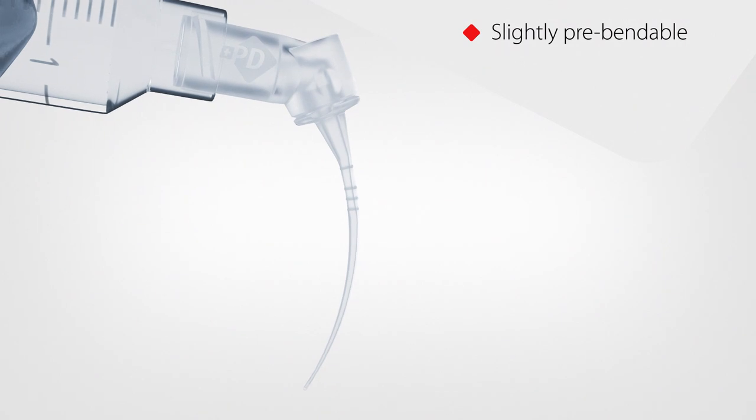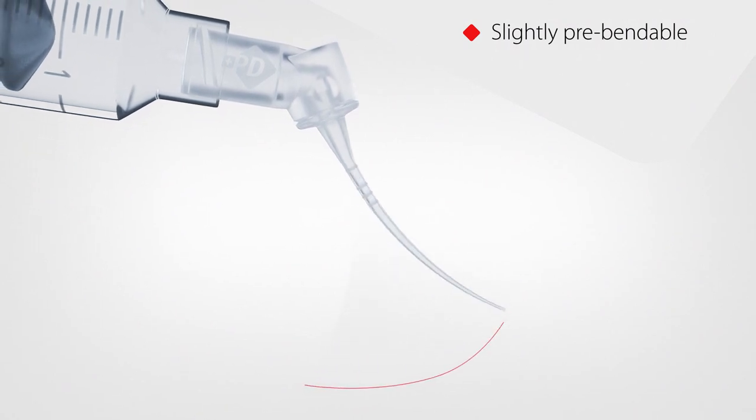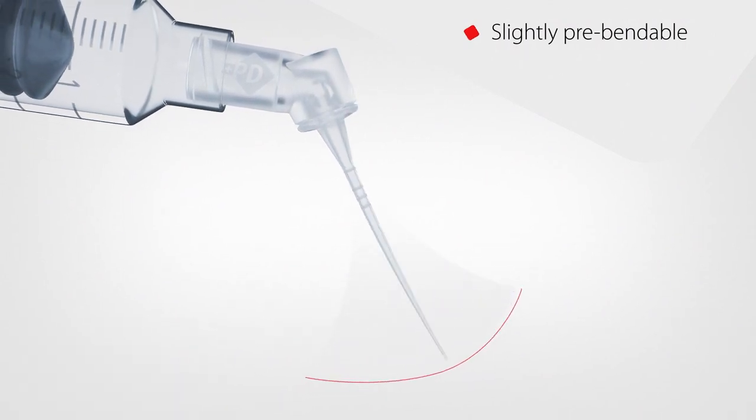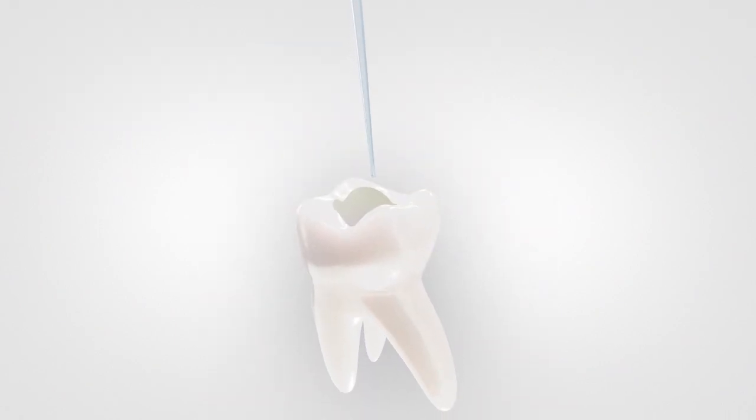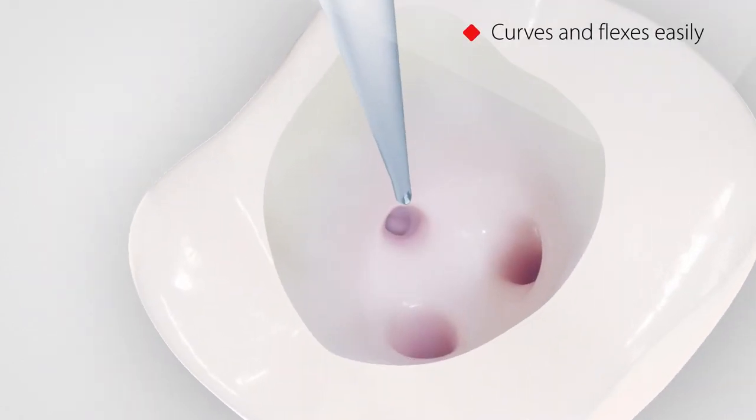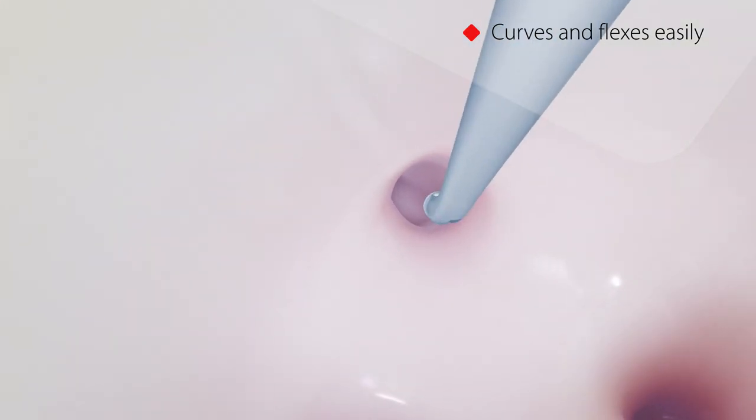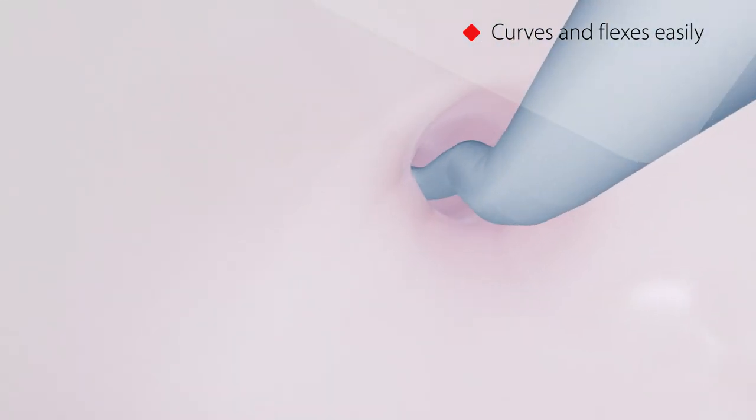If necessary, Aeroflex can be slightly pre-bent before insertion. The soft polypropylene body makes the needle curve and flex easily in the most complex root canal anatomy without being traumatic for dentin.